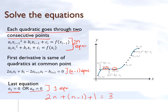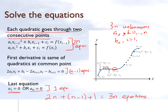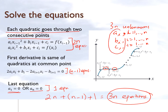To summarize: we have 3n equations and 3n unknowns. The unknowns are the aᵢ's, bᵢ's, and cᵢ's, each going from i = 1 to n. Since each quadratic has three unknowns and there are n quadratics, we get 3n unknowns. Solving these 3n simultaneous linear equations gives us the coefficients aᵢ, bᵢ, and cᵢ — and that is the theory behind quadratic spline interpolation.